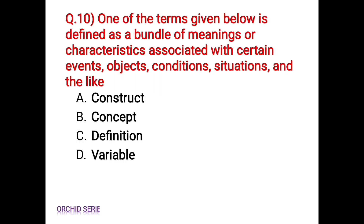Question 10: One of the terms given below is defined as a bundle of meanings or characteristics associated with certain events, objects, conditions, situations, and the like. Options are: Option A: Construct, Option B: Concept, Option C: Definition, Option D: Variable. The correct answer is Option B, Concept.